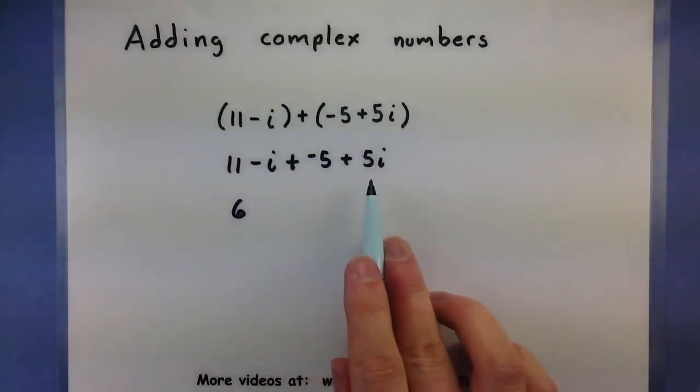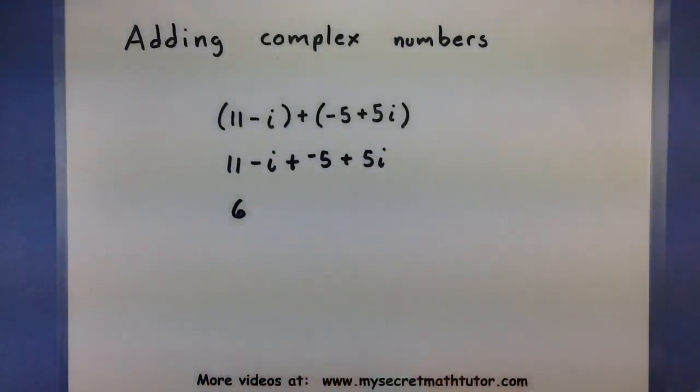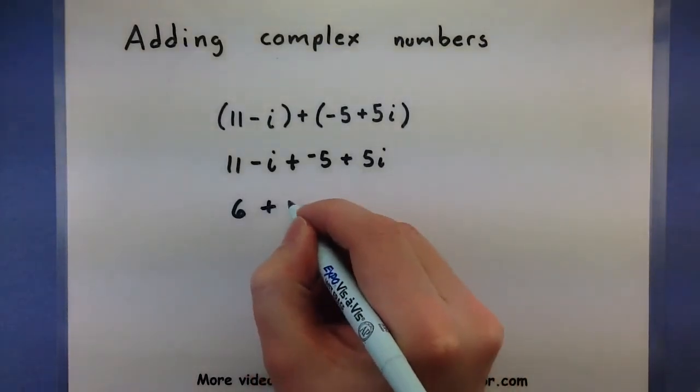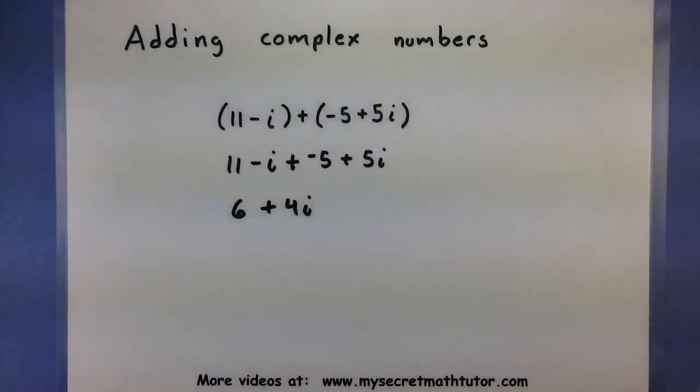Negative i and plus 5, that's like a negative 1 and a plus 5, so plus 4i.